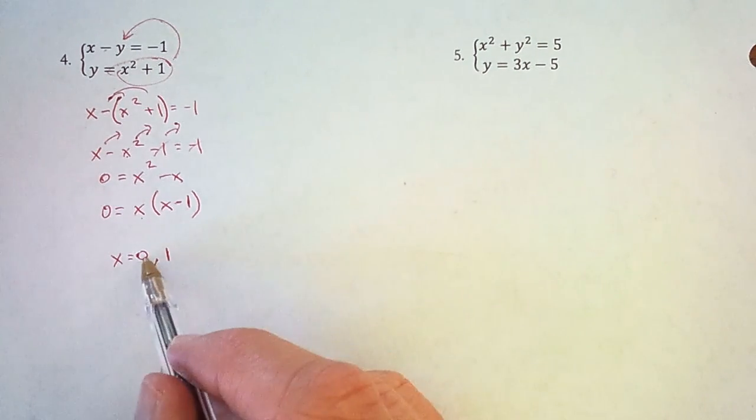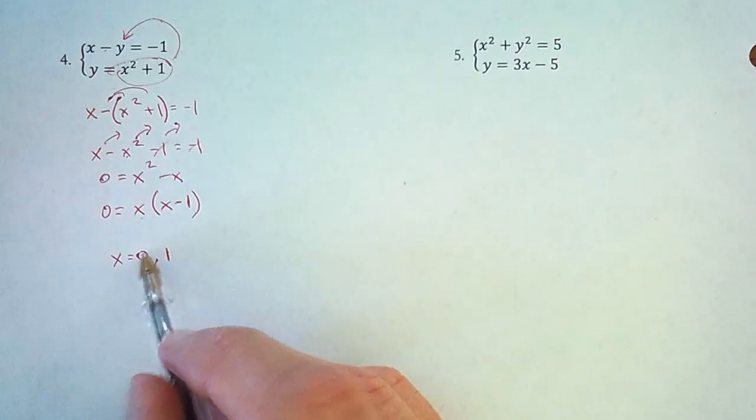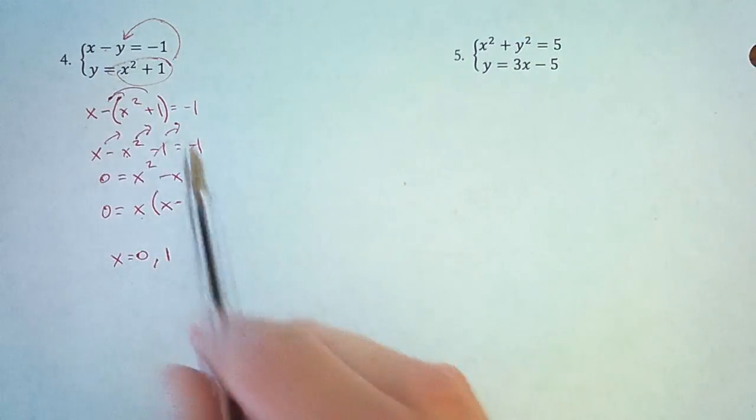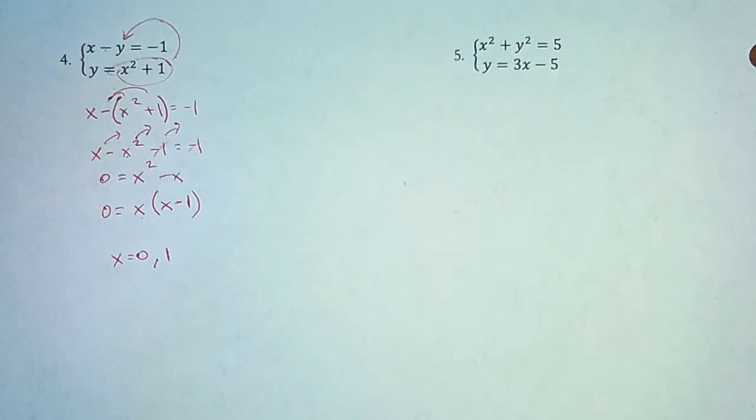So what I need to do is substitute a 0 into one of these equations, then substitute a 1 into one of these equations to get the corresponding y values. So my solutions, and there will be two of them, will have a 0 for x and a 1 for x. And I need to find out what the corresponding y values are.